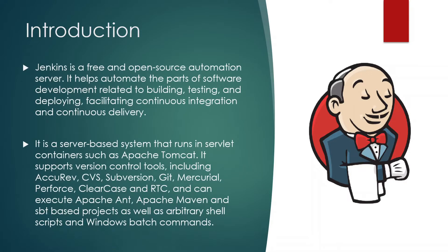So what exactly is Jenkins? Jenkins is a free and open source automation server. It helps automate the parts of software development related to building, testing, and deploying. It facilitates continuous integration and continuous delivery. Open source software is code that is designed to be publicly accessible — anyone can see, modify, and distribute the code as they see fit. So Jenkins is an open source automation server.